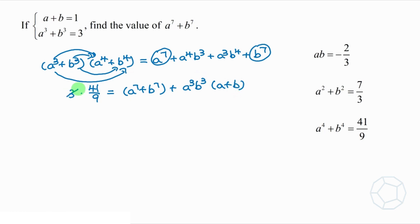Cancel out 3 and 9 on the left, and we put a plus b equals to 1, and ab equals to negative 2 over 3 again.